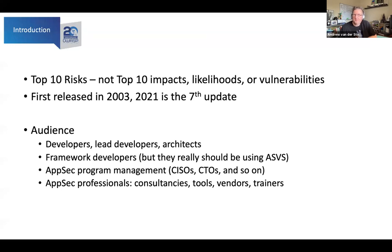The Top 10 has always been about risks, not impacts, likelihoods, or vulnerabilities. It's not about the breach value. There are many people who are upset with us for not ordering the OWASP Top 10 in their preferred way. Depending on your view of the data, they may disagree with our ordering. To them I say: either get more data than us — and we have 515,000 apps worth of data — or, as Brian Glass did, who's now a co-leader, have a better analysis.